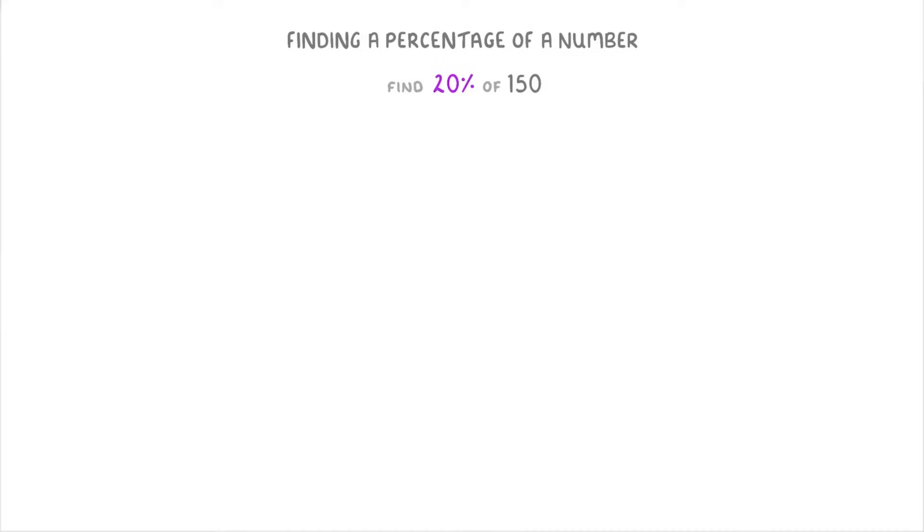The easiest way to do this is probably to use the percentage button on your calculator, and just do 20% times 150, which will give you 30.